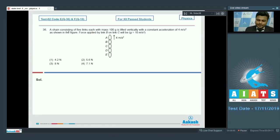Here is question number 36. A chain consisting of five links, each of mass 100 grams, is lifted vertically with constant acceleration of 4 meter per second squared as shown in the figure. The force applied by link B on link C will be what? We have to calculate the force between link B and C.